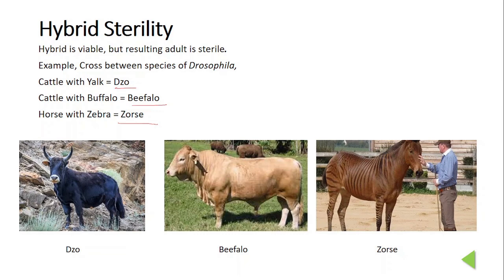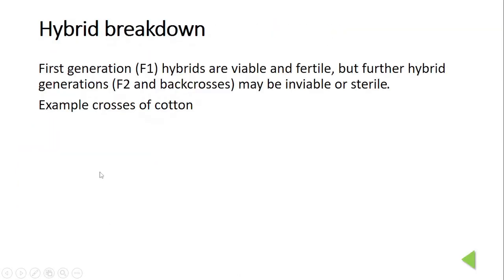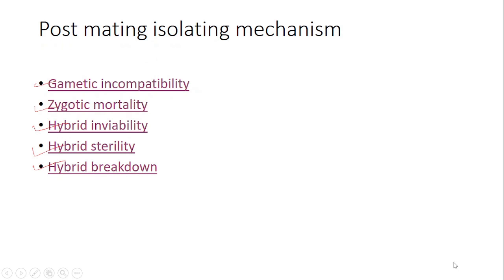The last mechanism is hybrid breakdown. In hybrid breakdown, the first generation (F1) hybrids are viable and fertile, but further hybrids in the F2 generation may be inviable or sterile. A classical example is provided by F1 hybrids of Gossypium arboreum and Gossypium herbaceum — cotton species whose F1 generation hybrids are viable, but when crossed for the F2 generation, the hybrids are inviable or sterile.